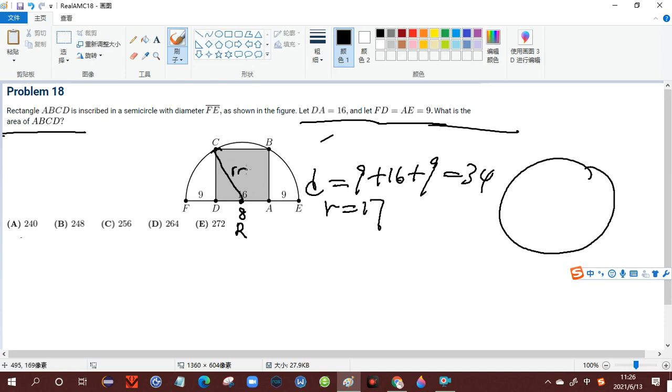So therefore, we know that this is 17. According to the Pythagorean theorem, 17 squared minus 8 squared is equal to 15.